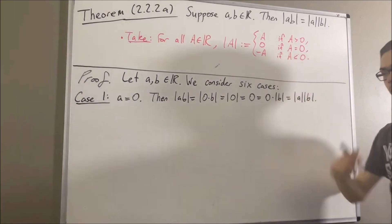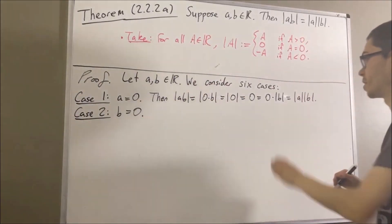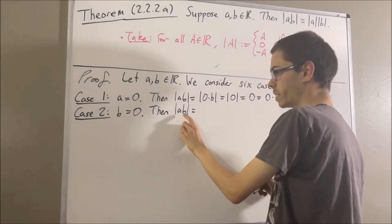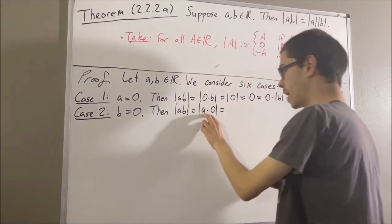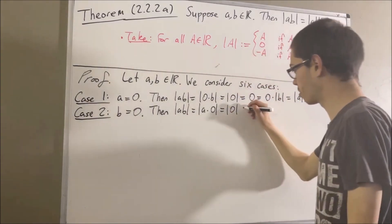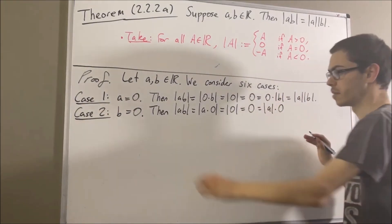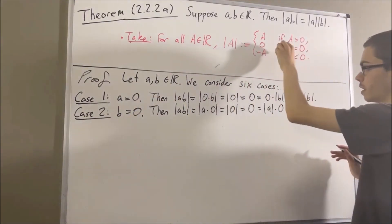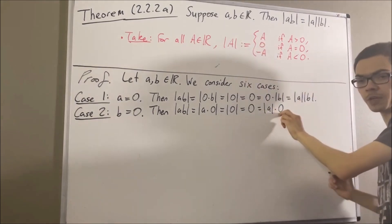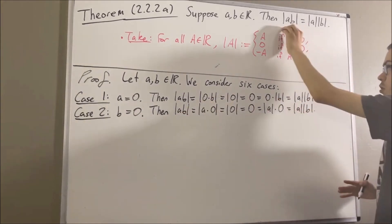Now we're going to move on to the case where B is equal to zero. Again, we're going to establish a chain of equalities showing that these two are equal. Since B is equal to zero, we can replace the B here with zero. We know that A times zero is zero. By definition of absolute value, the absolute value of zero is zero. We know that zero is equal to the absolute value of A times zero. And since B is equal to zero, by definition of absolute value the absolute value of B is equal to zero, so we can replace the zero here with absolute value of B.